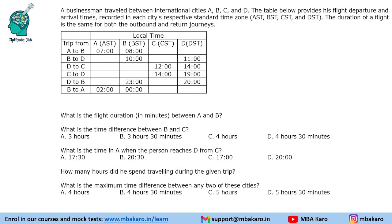A businessman traveled between international cities A, B, C and D. The table below provides his flight departure and arrival times recorded in each city's respective standard time zones — named AST, BST, CST, and DST as per the city.